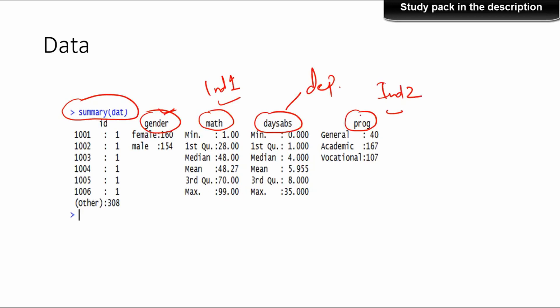Looking at the distribution of the data, program is a categorical variable — the program a student is enrolled in. There are three different programs: general, academic, and vocational. 40 students enrolled in the general program, 167 in academic, and 107 in vocational. The variable maths is a continuous variable.